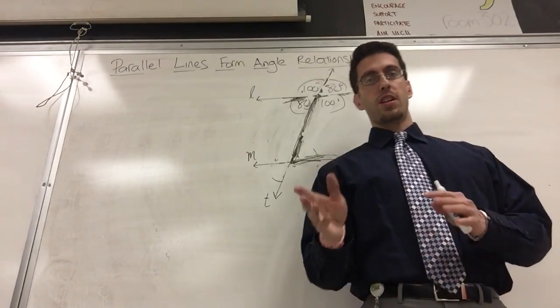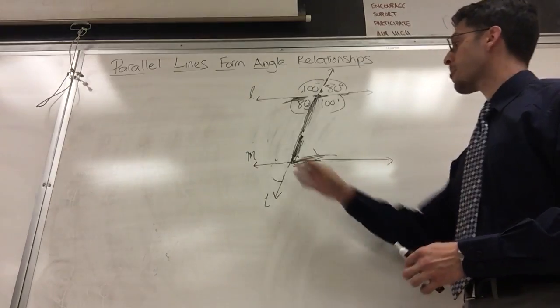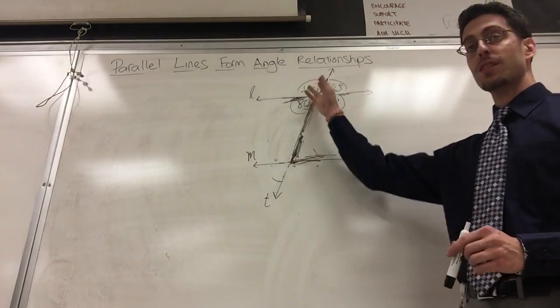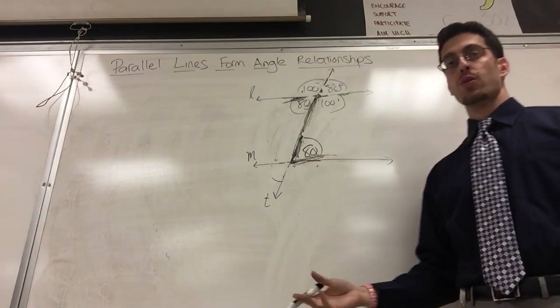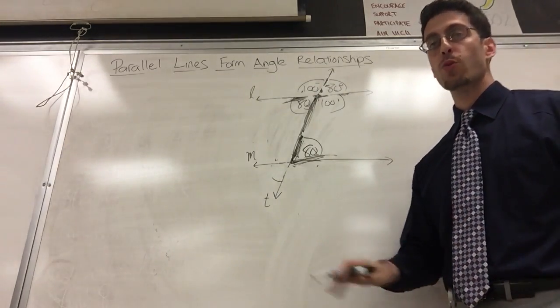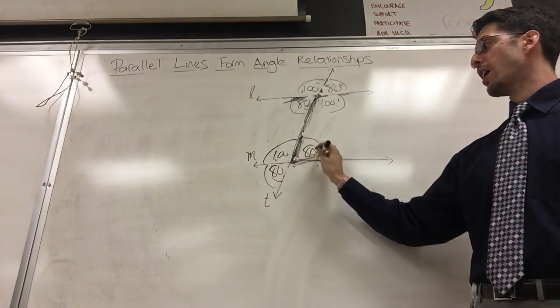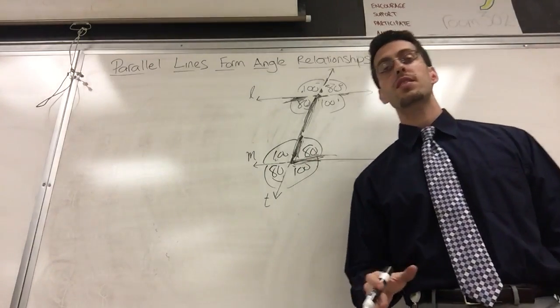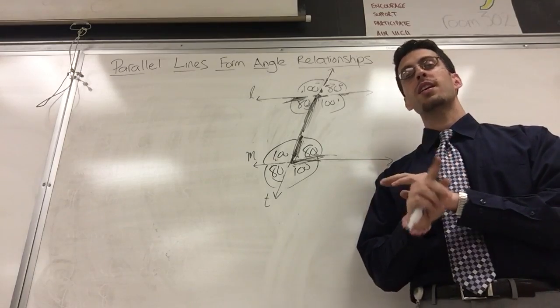Next—these are the same as this. If this is 80, the corresponding angle is 80. Once you got that, the rest is smooth: 80, 80, 100, got to be 100. That's it, simple as that. That's the basics. You get the vocabulary, you get the relationships, you're straight.